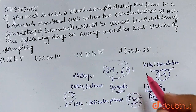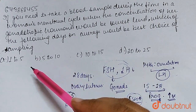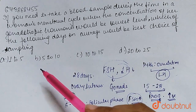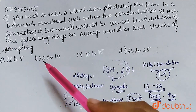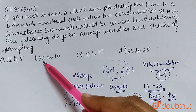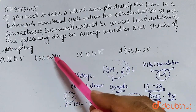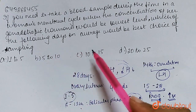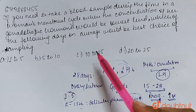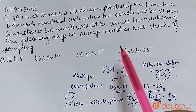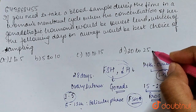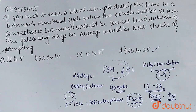Looking at the answer options: the first option is days 1 to 5, which is the menstrual phase. The second option, days 5 to 10, is the follicular phase. Around the 14th day is ovulation. The appropriate answer is the last option — days 20 to 25. Thank you.